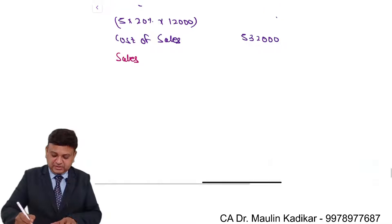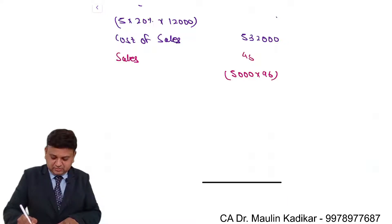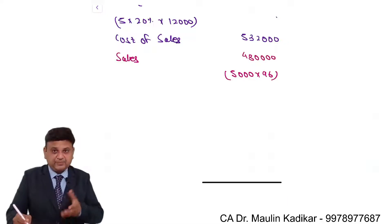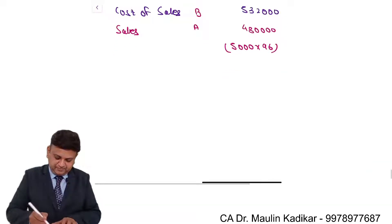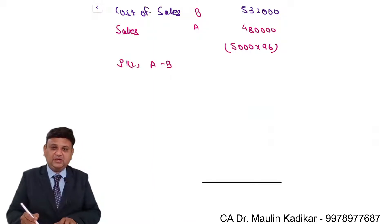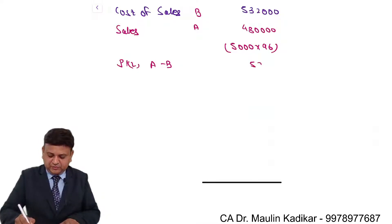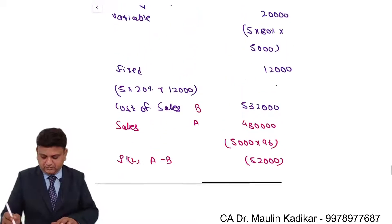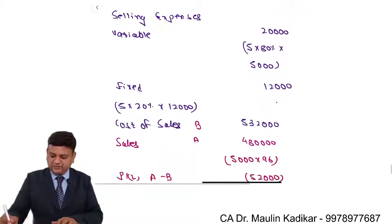Units sold are 5,000 at a selling price of 96, so sales value is 4,80,000. Sales minus cost of sales: 4,80,000 minus 5,32,000 results in a loss of 52,000. This is the way the profit or loss is calculated in the first year.